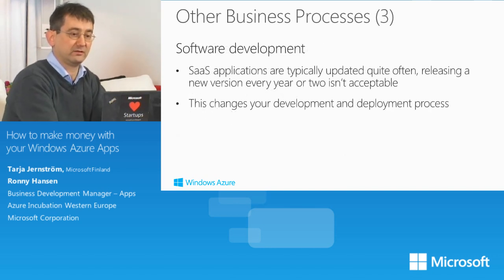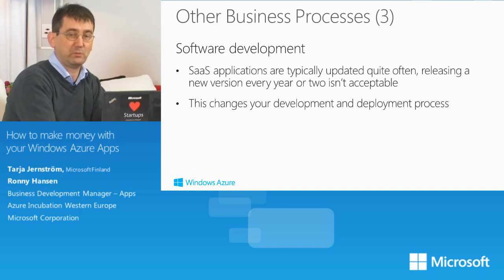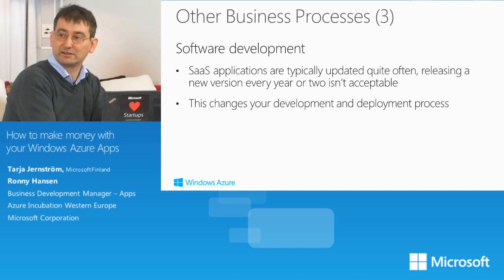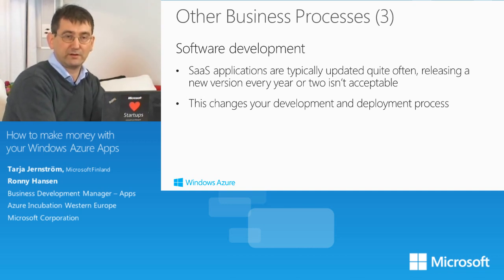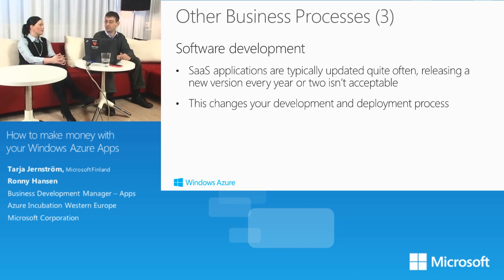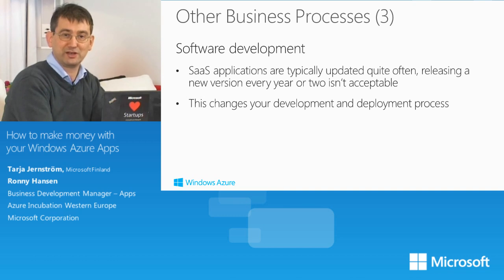This also affects software development. In a software as a service solution, applications are typically updated quite often — releasing a new version every year or two isn't acceptable. There's typically a deployment every month or even more often, like companies such as Facebook. But this is also a risk for customers because from one day to another they can get new features they didn't ask for, or old ones can disappear. You have to be careful not to change it too much. Deploying to a shared solution also requires care so you don't have downtime or negatively affect customers during upgrades.